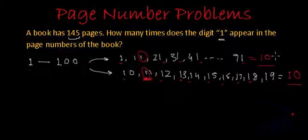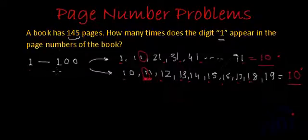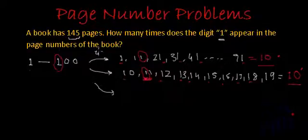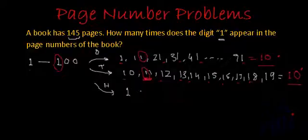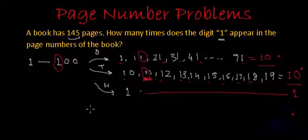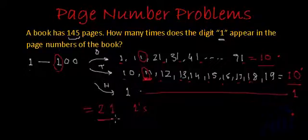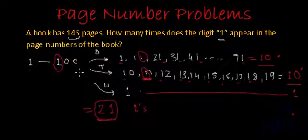So from 1 to 100, we have 10 ones at units place and 10 ones at tens place. But 100 also has a 1 at the hundreds place. So if we talk about page numbers from 1 to 100, there are total 10 plus 10 plus 1, which equals 21 ones.